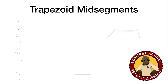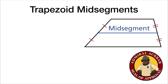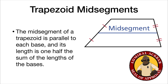Now let's talk about trapezoid mid-segments. The mid-segment of a trapezoid is very similar to the mid-segment of a triangle — it is the segment whose endpoints are the midpoints of the legs. The trapezoid mid-segment theorem says the mid-segment is parallel to each base, and its length is one-half the sum of the bases. For example, if the bases are 6 and 14, then the mid-segment is (6 + 14) / 2 = 10.